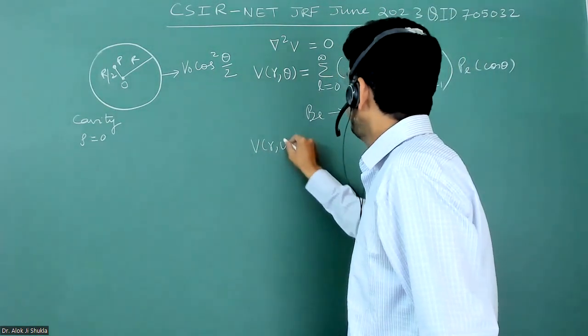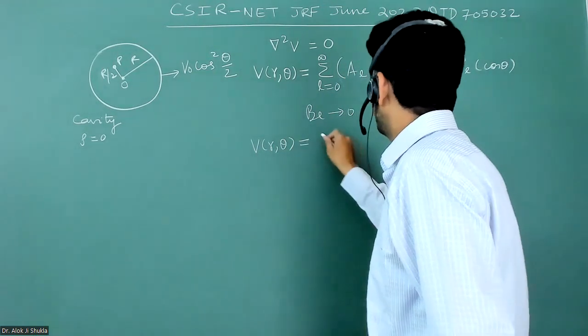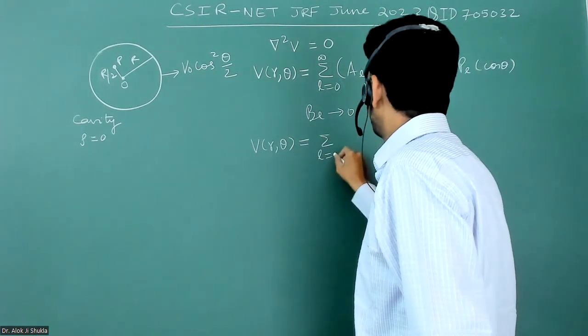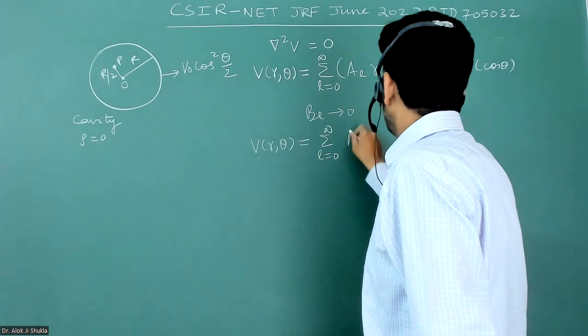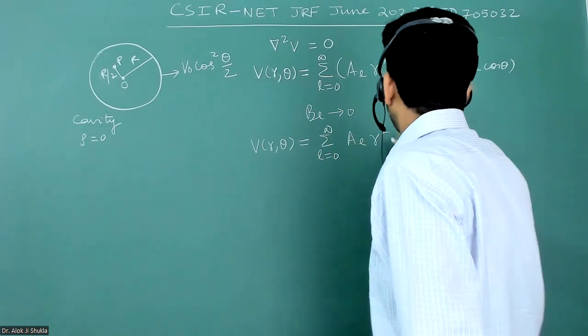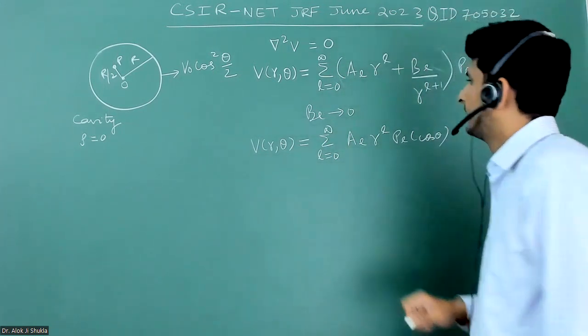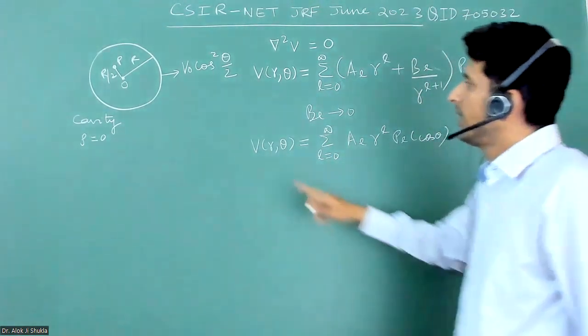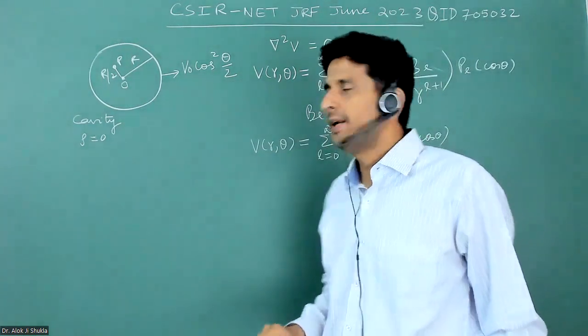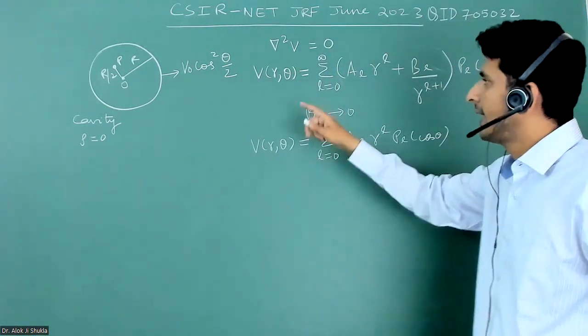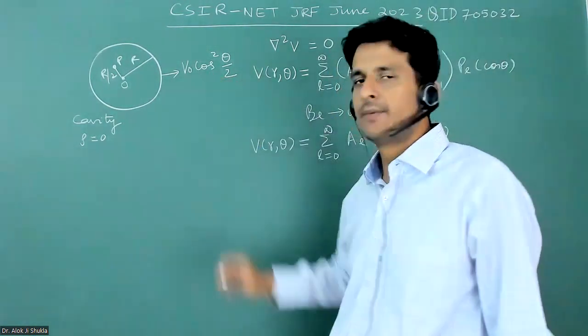Our potential will become V(r, theta) equals summation L equals 0 to infinity: AL R to the power L times PL cos theta. Now, the boundary conditions suggest that when this small r is equal to capital R, the potential should become this.